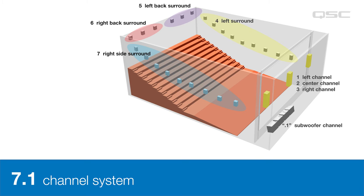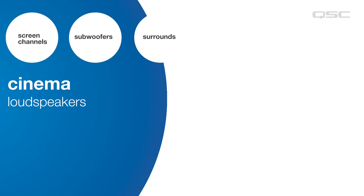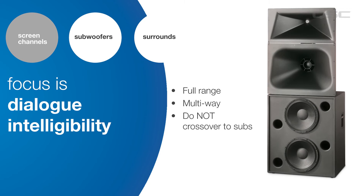7.1 is the most common format used today, and any modern theater should be designed to accommodate this format at a minimum. Screen channels deliver the soundtrack's dialogue and music. These are full-range, multi-way systems, but it's important to note that their low-frequency content does not cross over to the subwoofers. They receive three discrete channels of audio — left, center, and right — with most dialogue going to the center channel. All three must be an identical make and model, since sounds may pan across the screen and should have the same tonality.